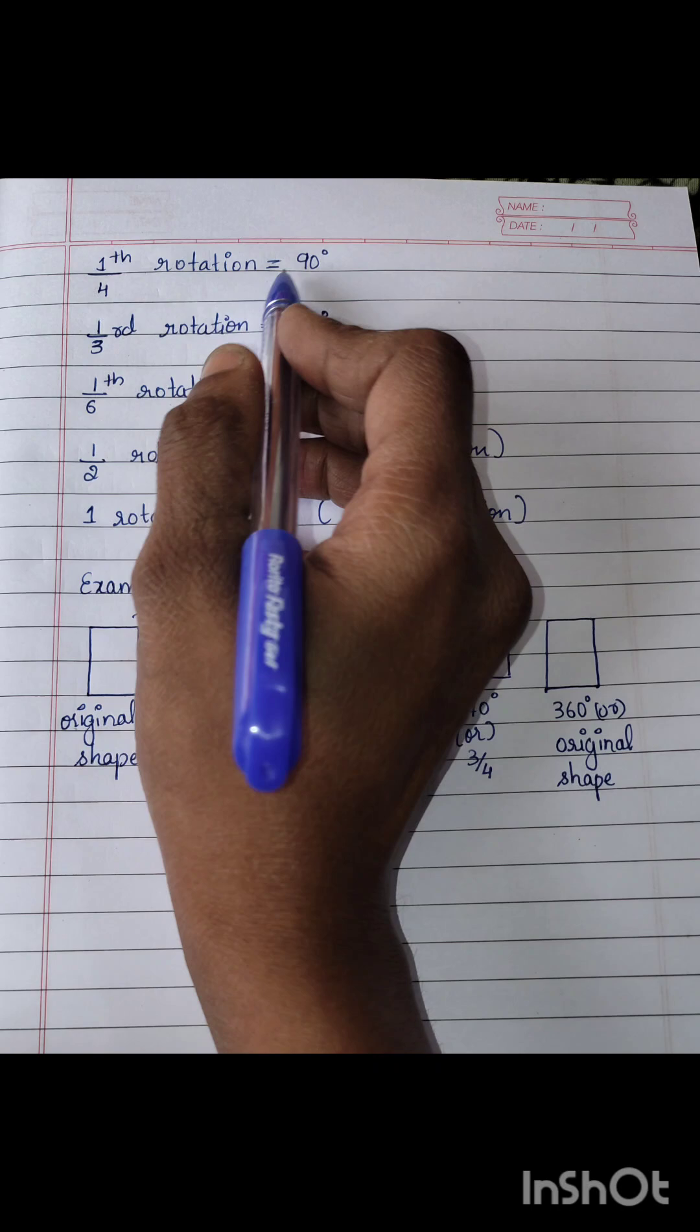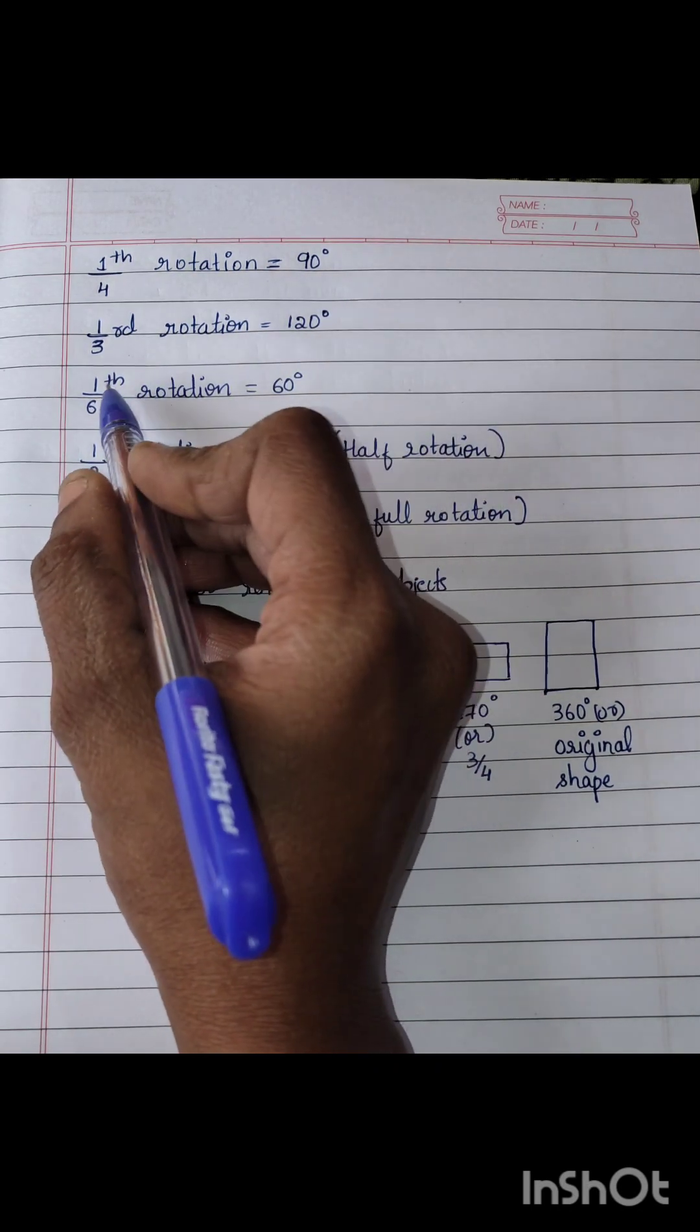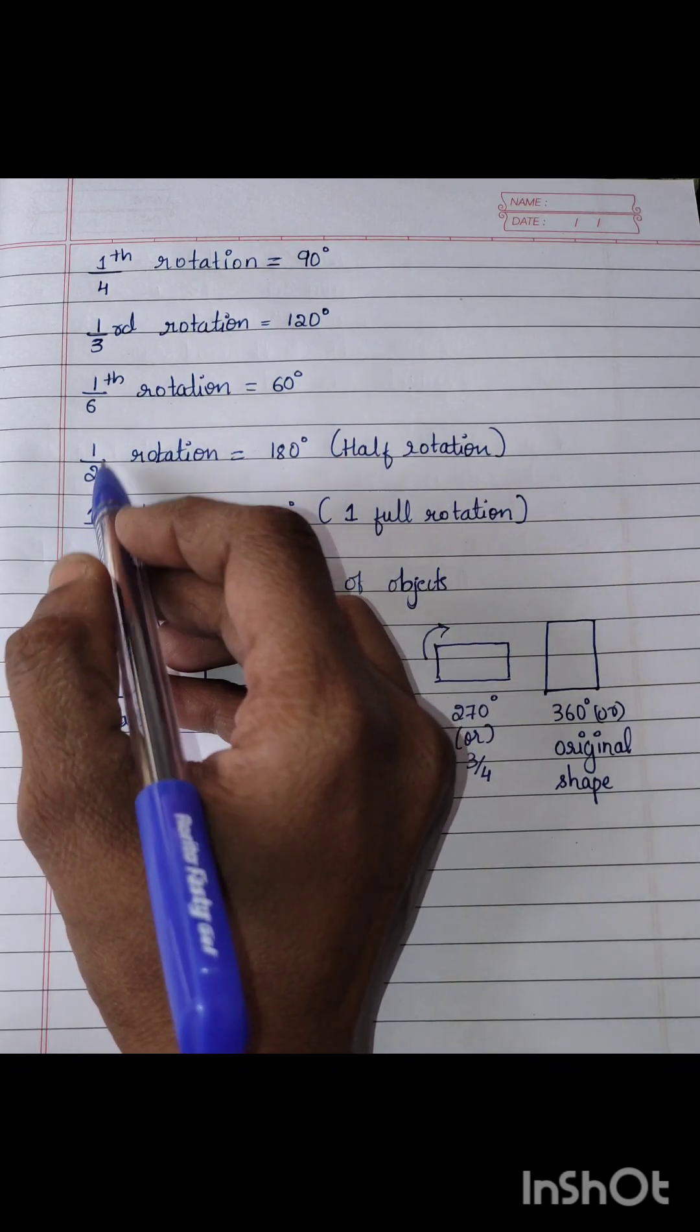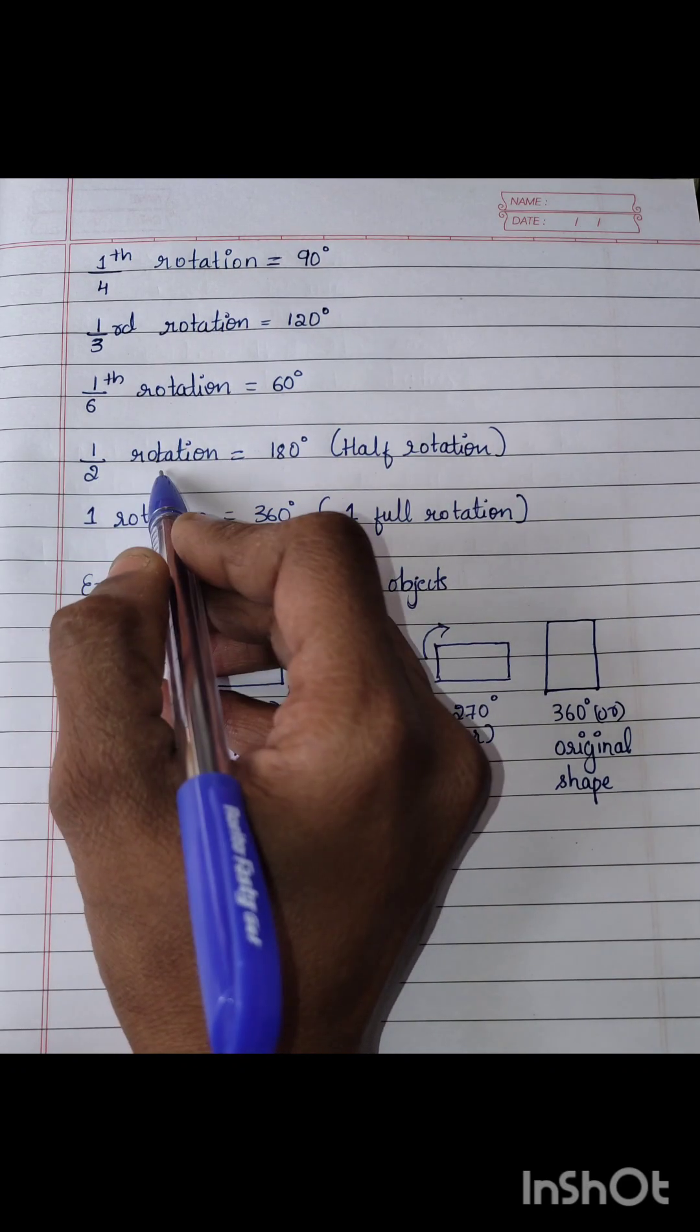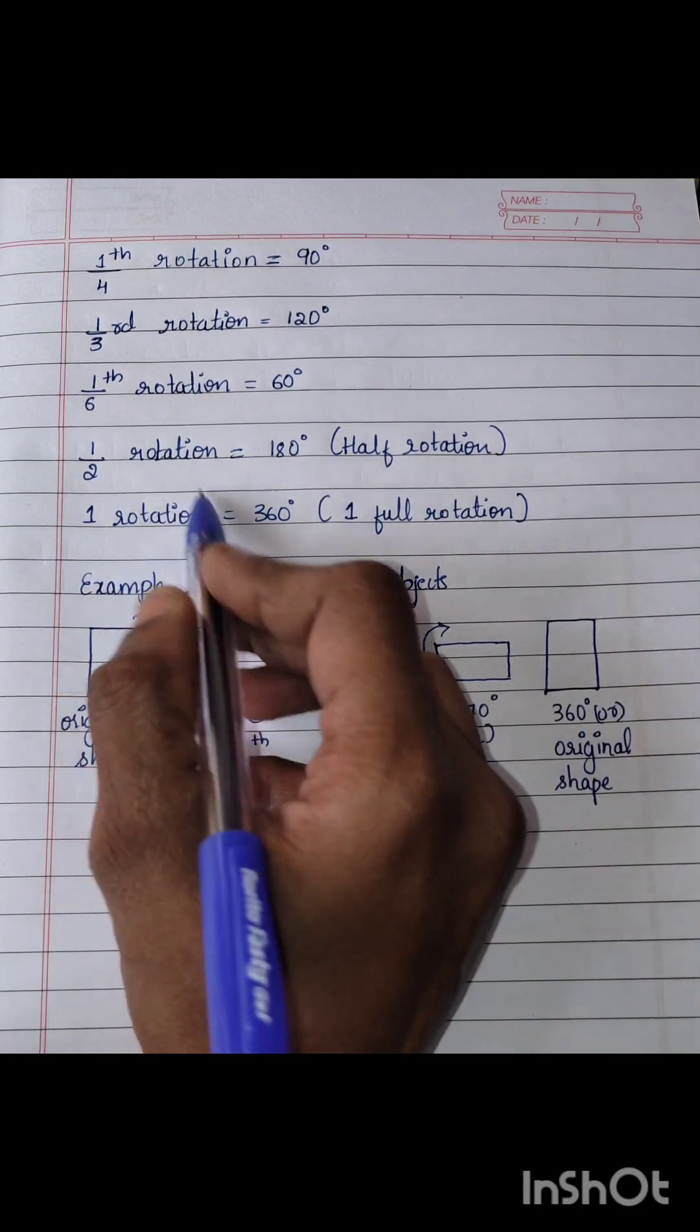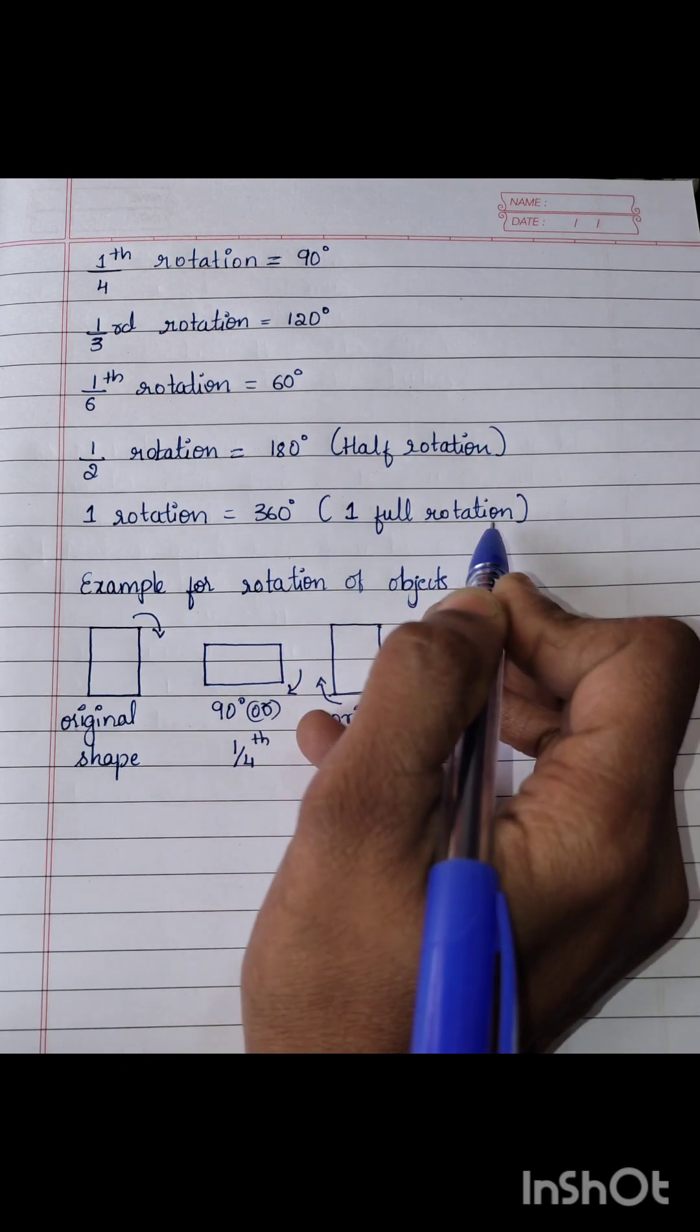So here one fourth rotation, that means 90 degree. One third rotation is 120 degree. One sixth means 60 degree and half rotation or one by two rotation is equal to 180 degree. That is half rotation. One rotation is equal to 360 degree. That means one full rotation.